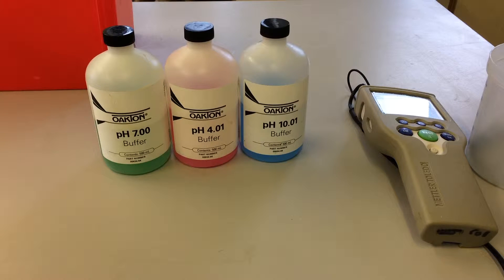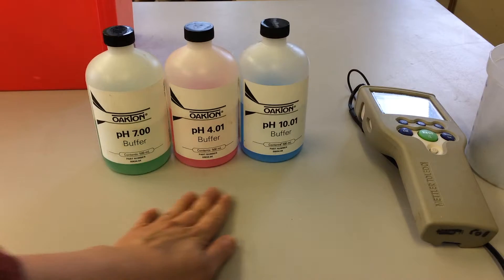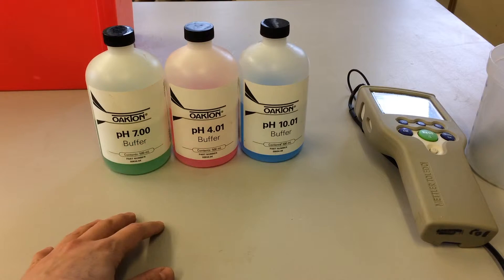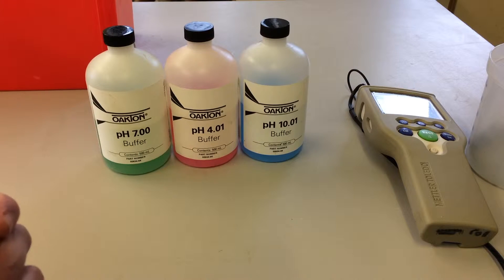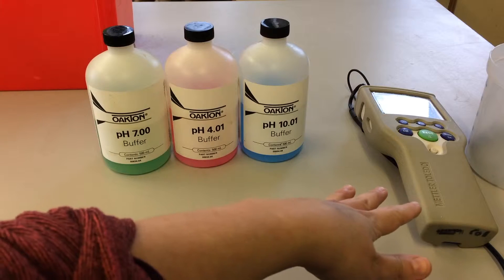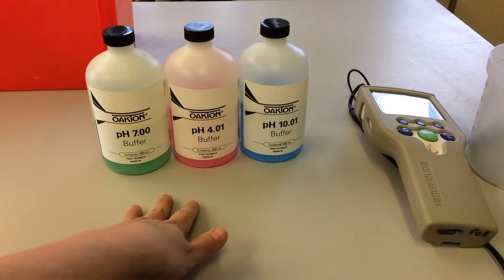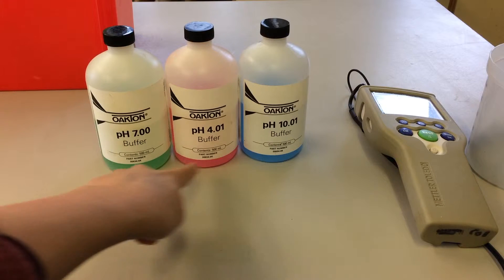With any piece of kit, one of the first things we need to do is make sure that it's calibrated before we use it. And with a pH meter we tend to use these pH buffers. The piece of kit that you use will depend entirely on the manufacturer's guidelines, but for the pH meter that we're using here, this Mettler Toledo, we do a three-point calibration, so we do it with buffers of four, seven, and ten.